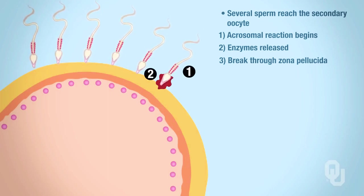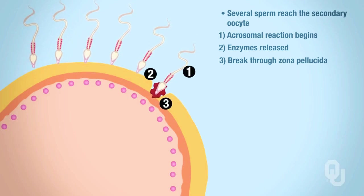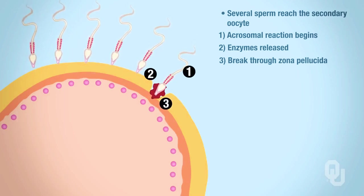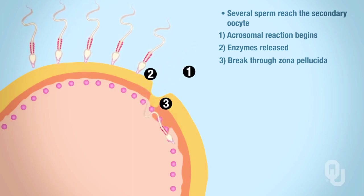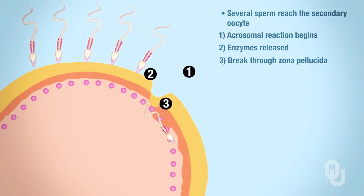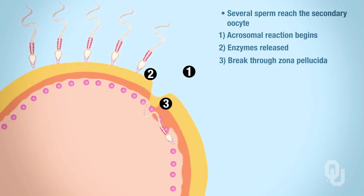In step three, we see breaking through the zona pellucida, because these sperm have to penetrate into the egg. So now sperm have gained entry into the secondary oocyte. Once they've gained entry into the secondary oocyte, the first sperm to bind to the receptor on the oocyte wins.